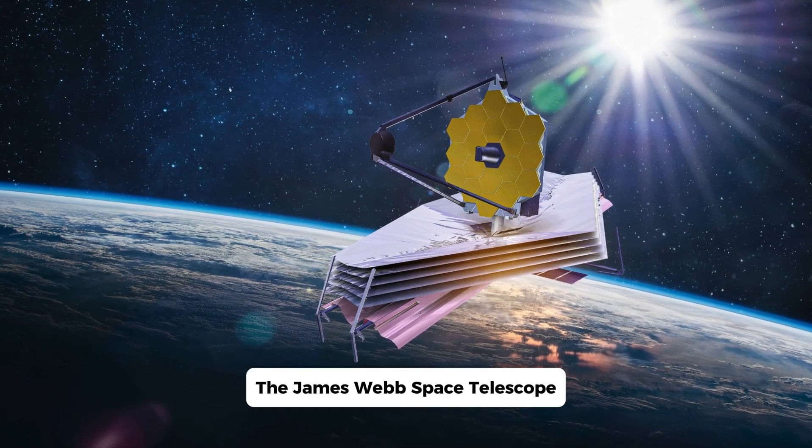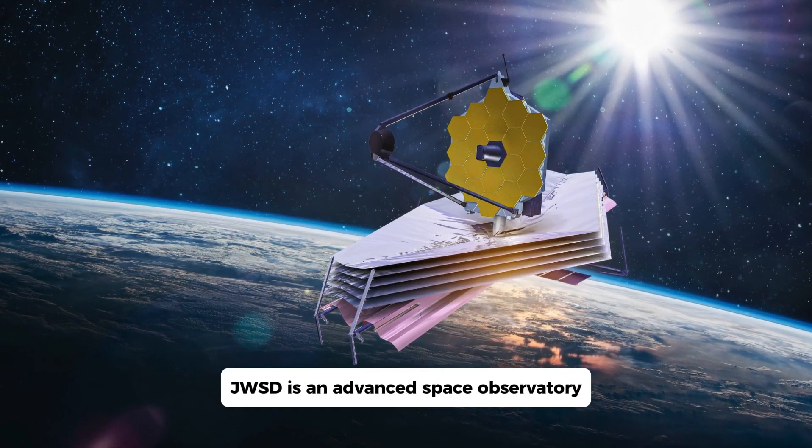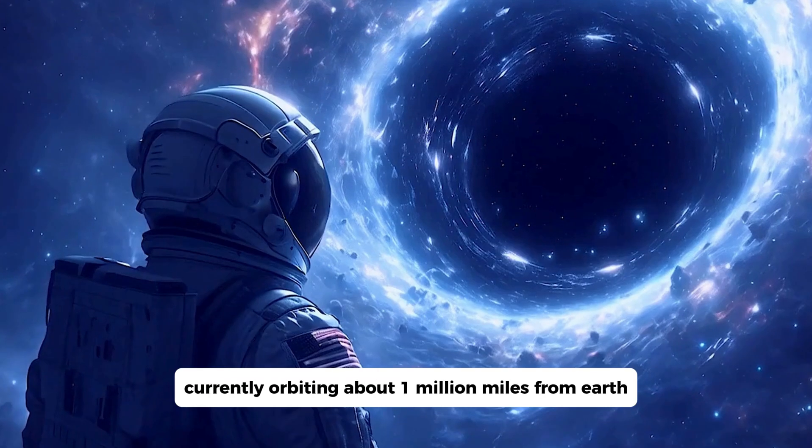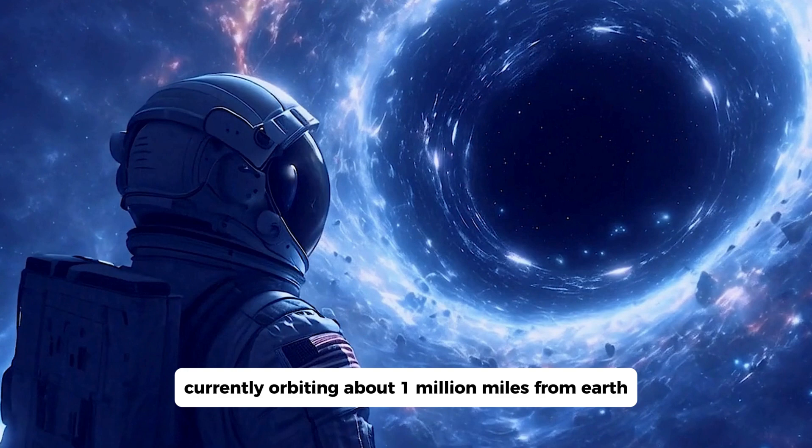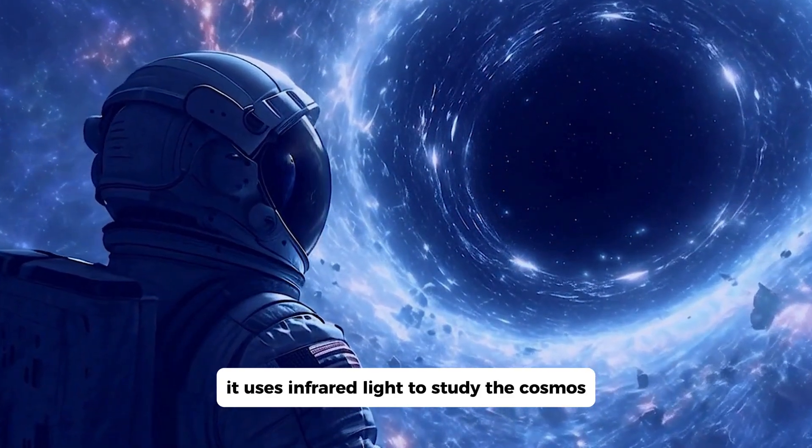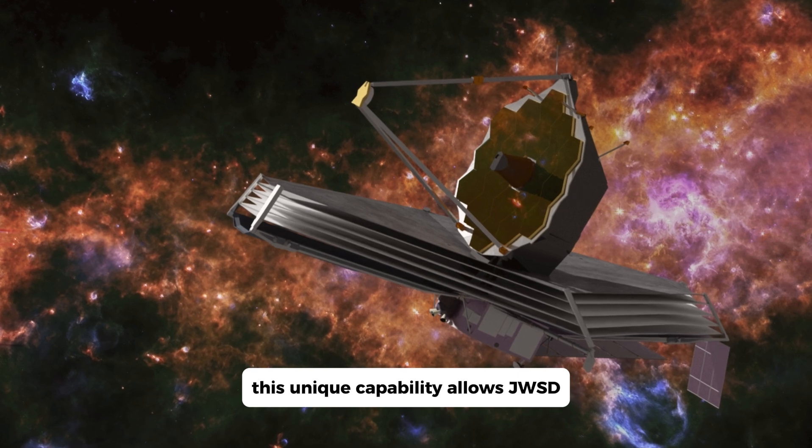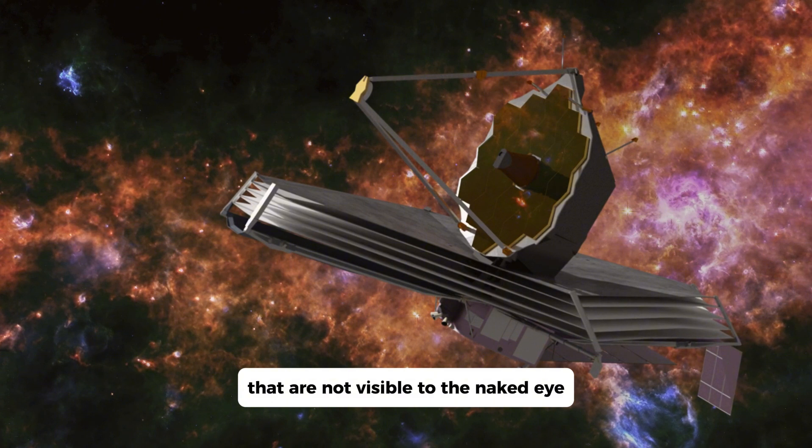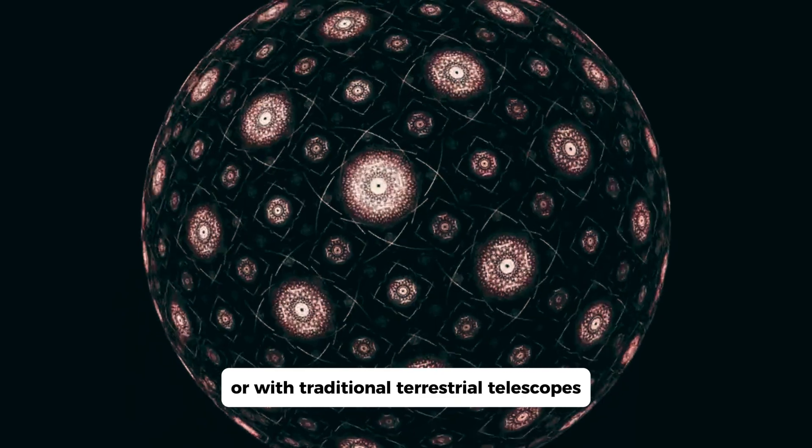The James Webb Space Telescope, JWST, is an advanced space observatory that was launched at the end of 2021. Currently orbiting about 1 million miles from Earth, it uses infrared light to study the cosmos. This unique capability allows JWST to detect subtle details that are not visible to the naked eye or with traditional terrestrial telescopes.